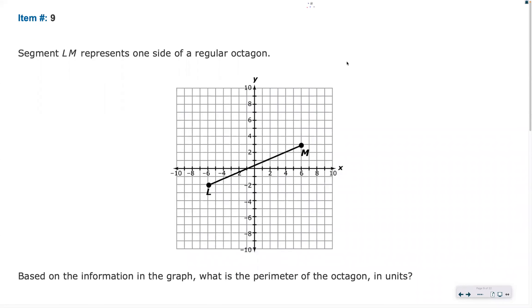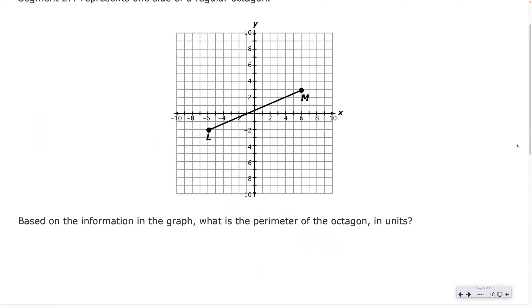Item 9 here. Segment LM represents one side of a regular octagon. What does octagon mean again? Eight-sided figure. That's one side of an eight-sided figure. Based on the information in the graph, what is the perimeter of the octagon in units?